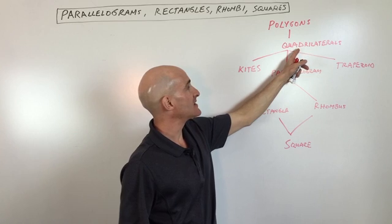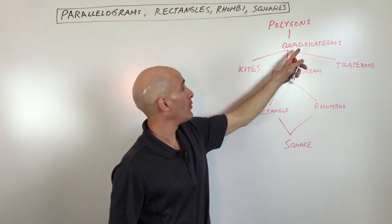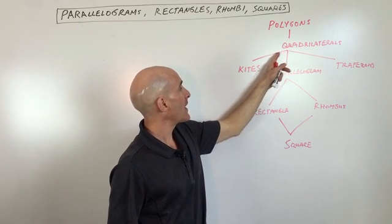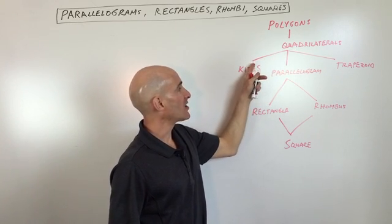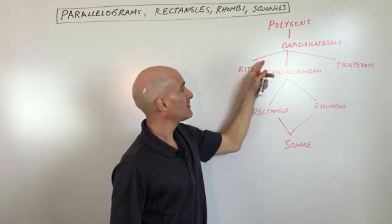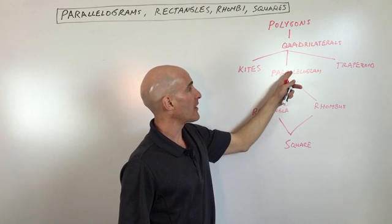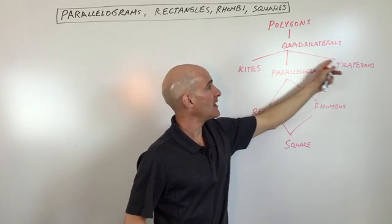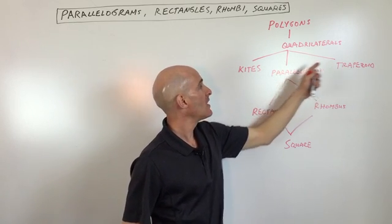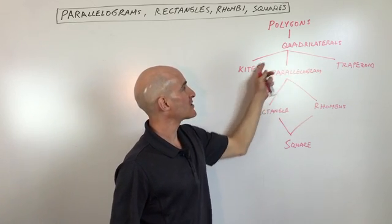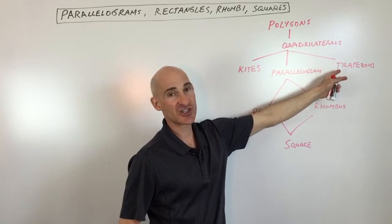If you take that down one more level, quadrilaterals can be subdivided into kites, parallelograms, and trapezoids. Now let's see if we can talk about the distinctions here.